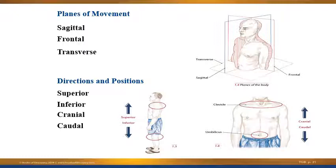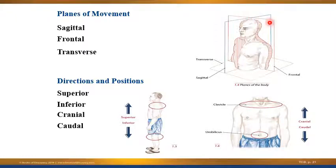When describing movement, we often refer to planes of movement, and we have three planes that our body moves through: the sagittal plane, the frontal plane, and the transverse plane. The sagittal plane divides the body into right and left halves. The frontal plane divides the body into front and back, and the transverse plane divides the body into top and bottom.